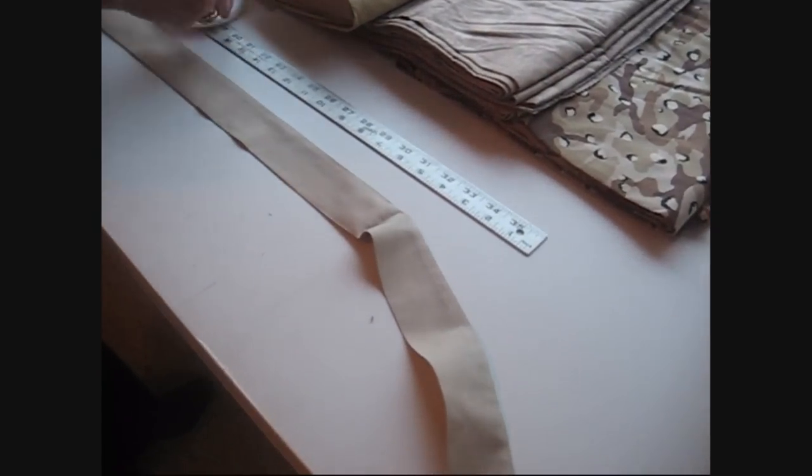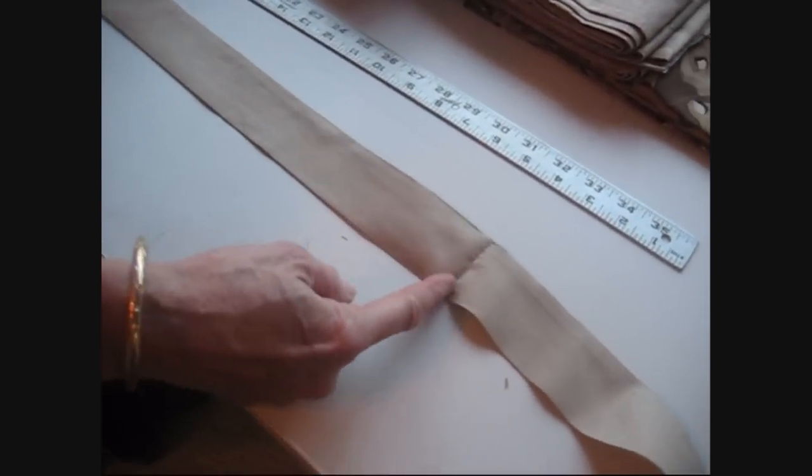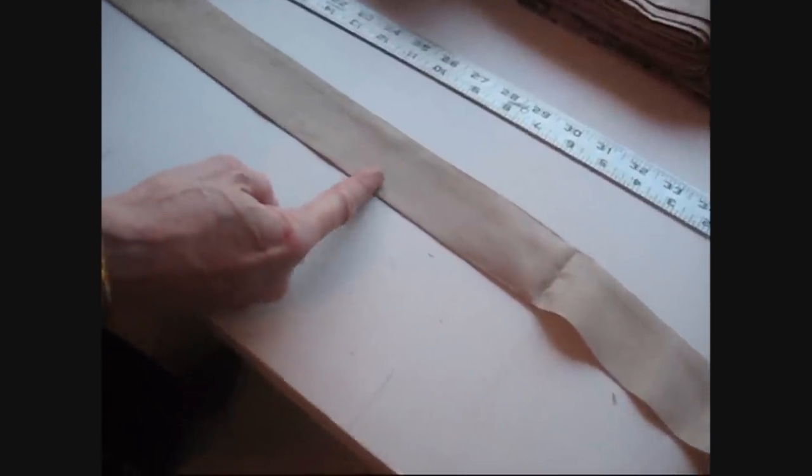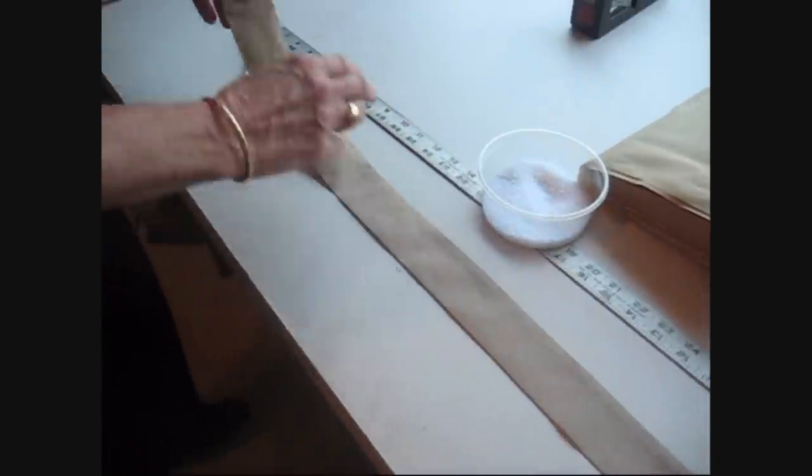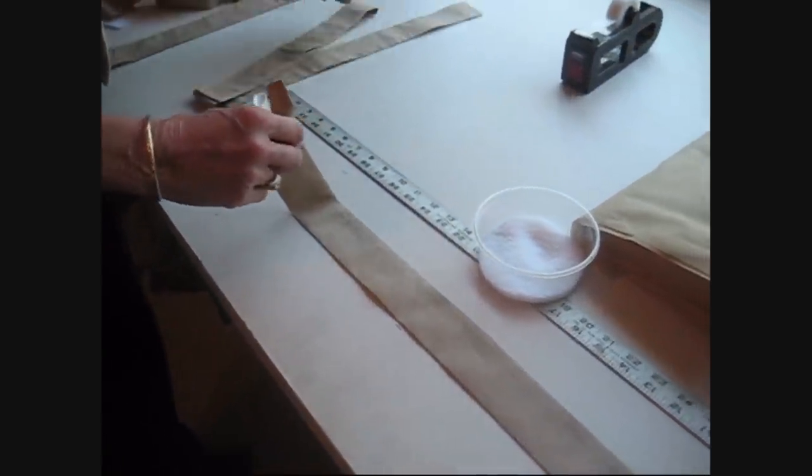So now you will sew another cross stitch 4½ inches away from the first one. Add more crystals, sew, add more crystals, sew, until you have four pockets.